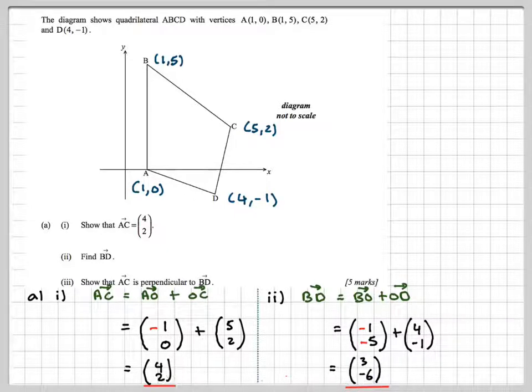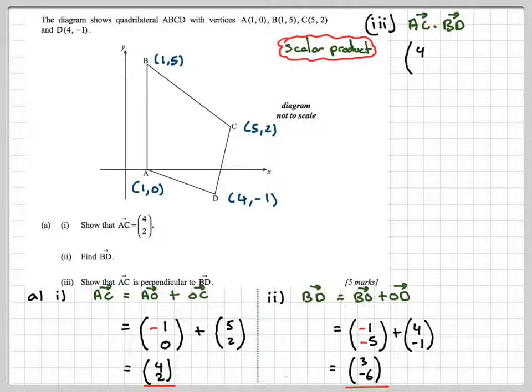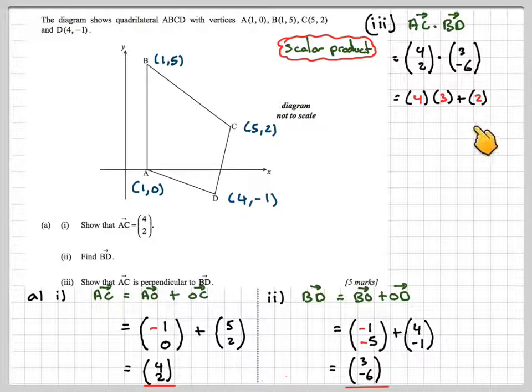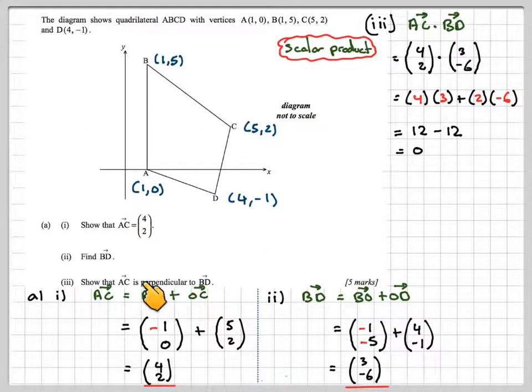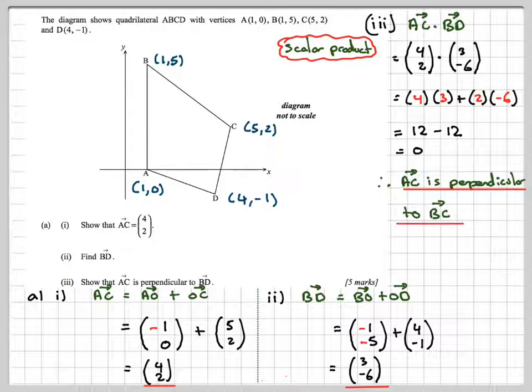We now have to show that these two vectors are perpendicular. To do that, we use the scalar product. We find AC dot BD. This is called the scalar product, so that's (4,2) dot (3,-6), and then we get 4 times 3 plus 2 times -6, so that's 12 - 12, which is 0. If the scalar product is 0, that is the condition for two vectors being perpendicular. Therefore, AC is perpendicular to BD. This is quite important that we're showing this because we need to do this in a later part of the question.